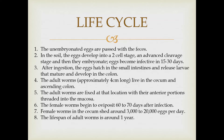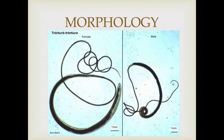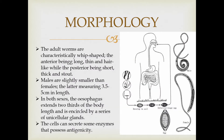Now let us explore the morphology of these worms. Characteristically, the males are actually smaller than the females. You would notice that the mouth section, or the anterior part of the worm, is thin and hair-like, and its posterior is the section which is stubby and short. You would also notice that their esophagus actually runs about two-thirds of the worm's body — that thin section — and it is actually lined with unicellular glands. These glands actually secrete enzymes which possess antigenicity, meaning they can stimulate an immune response when inside the body.